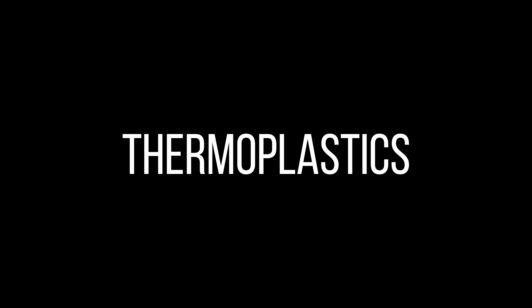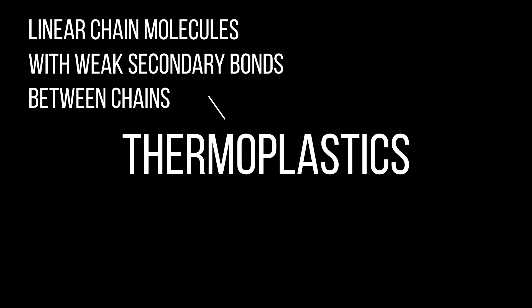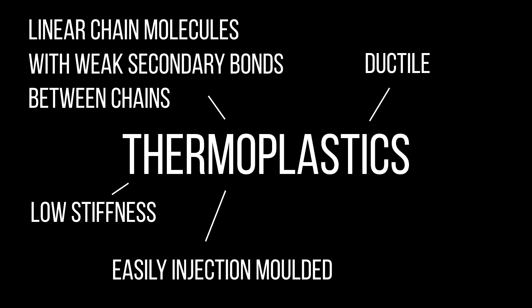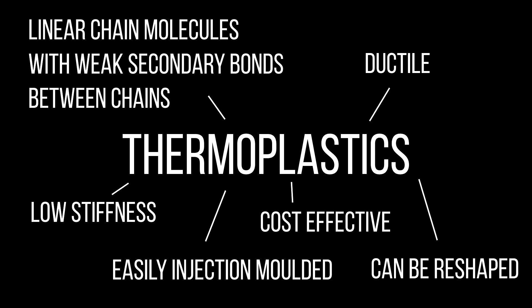Now, let's examine one of the two types of plastics, which is a thermoplastic. The atomic structure of thermoplastics is that it has linear chain molecules with weak secondary bonds between the chains. General characteristics of thermoplastics are that they are ductile, they have low stiffness, they're easily injection molded, they're typically cost effective, and the main one is that they can be reshaped after heating.